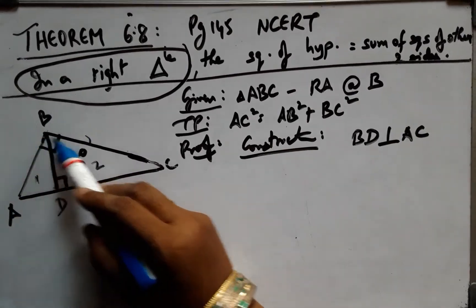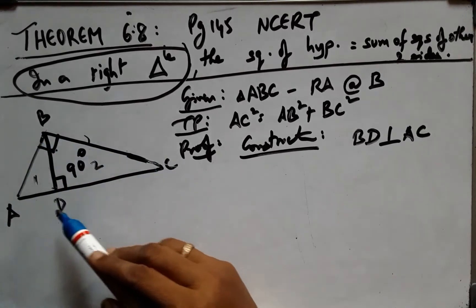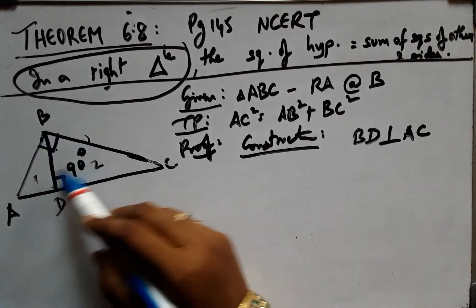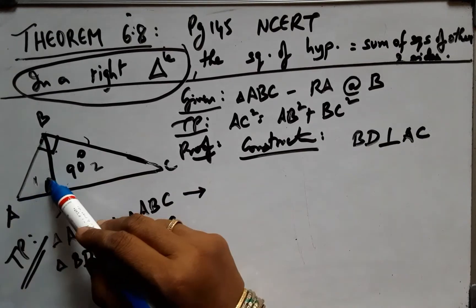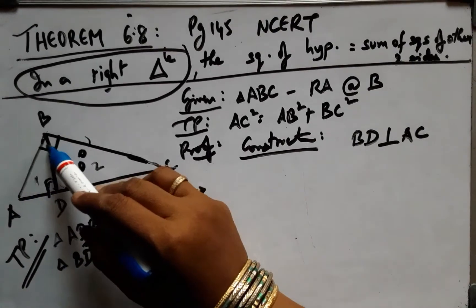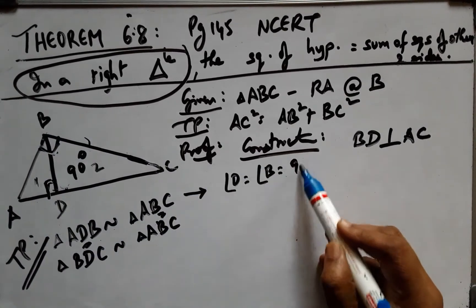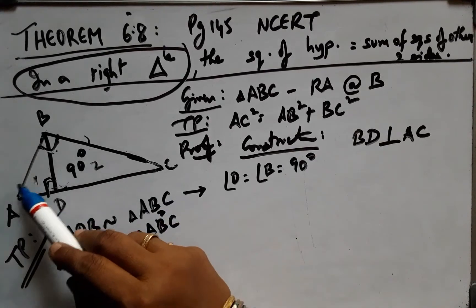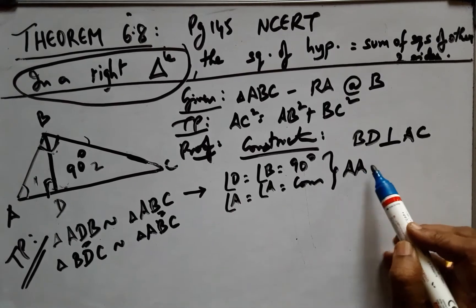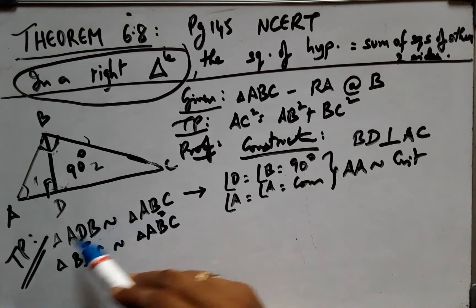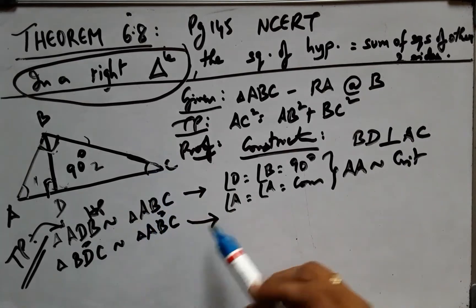This triangle is similar to triangle ABC. When both smaller triangles are similar to the whole triangle, they are mutually similar to each other. In triangle ADB, angle D is 90 degrees. Angle A is common to both triangles. By AA similarity criterion, the two triangles are proved similar.